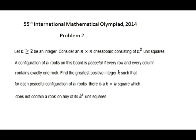This is the International Math Olympiad 2014, problem number 2. If n is an integer not less than 2, and there is an n by n chessboard, a configuration of n rooks on this board is called peaceful if every row and every column contains exactly one rook. Find the greatest positive integer k such that for each peaceful configuration of n rooks, there is a k by k square which does not contain a rook.